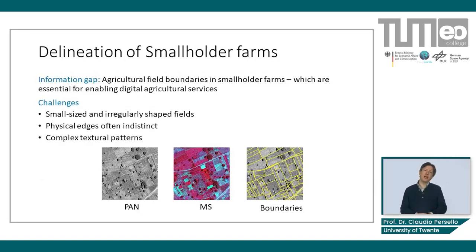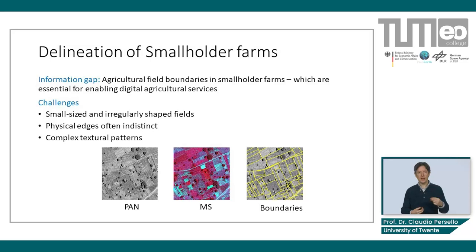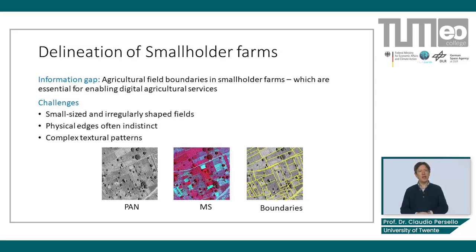One information gap is the lack of reliable and updated geospatial data on agricultural field boundaries, which are essential for enabling digital agricultural services and guiding interventions and investments to boost productivity. From a technical point of view, delineating agricultural fields in smaller farms is difficult because fields are small — most farms are between 0.2 to 2 hectares.